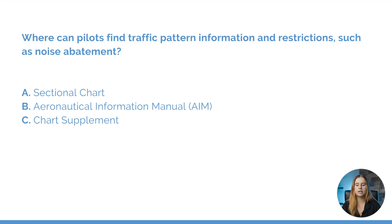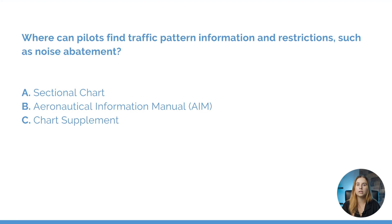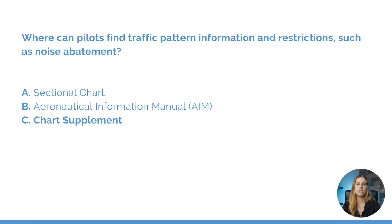Where can pilots find traffic pattern information and restrictions such as noise abatement? Options are: A, the sectional chart; B, the aeronautical information manual; or C, the chart supplement. While the sectional chart does have some basic traffic pattern information, it doesn't have all the necessary information we need before entering an airport. Our answer is C, the chart supplement. If there's anything non-standard or any certain procedures to follow at that airport, we're going to find that information in the chart supplement.